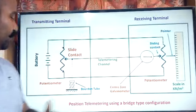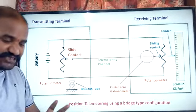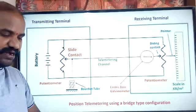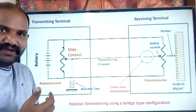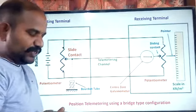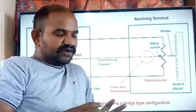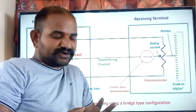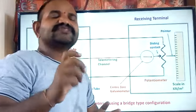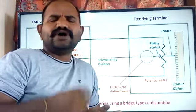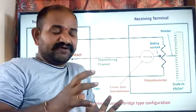This is the position telemetric system using a bridge type configuration. In the Wheatstone bridge concept we have four arms. Initially we adjust that bridge to give a null — that is, a balanced — reading by adjusting those four arms. This is similar to what we have seen with instrumentation amplifiers during the third semester, where one arm acts as a transducer.